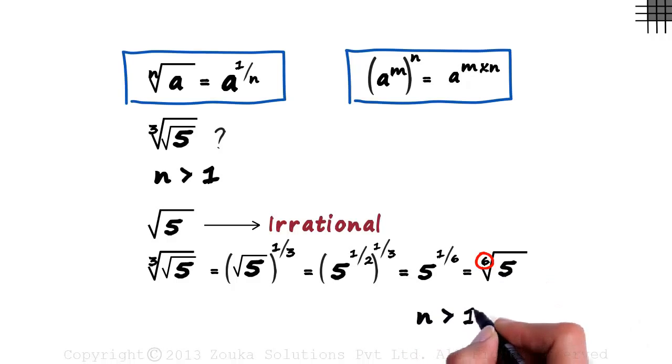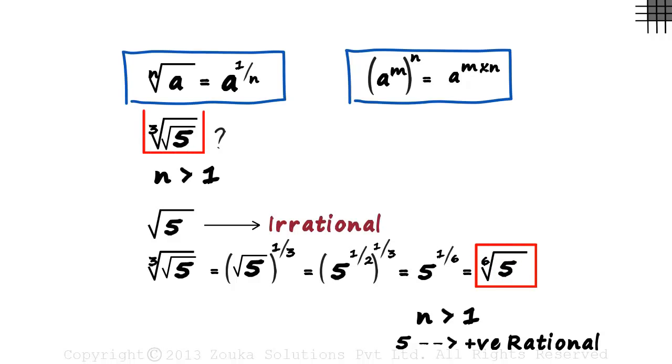Here the order is a natural number greater than 1. And the base 5 is a positive rational number. So this is a SIRD which makes this a SIRD too. After we modified this a bit, we realized that it is indeed a SIRD. We will understand this part of the video in much more detail in the coming videos.